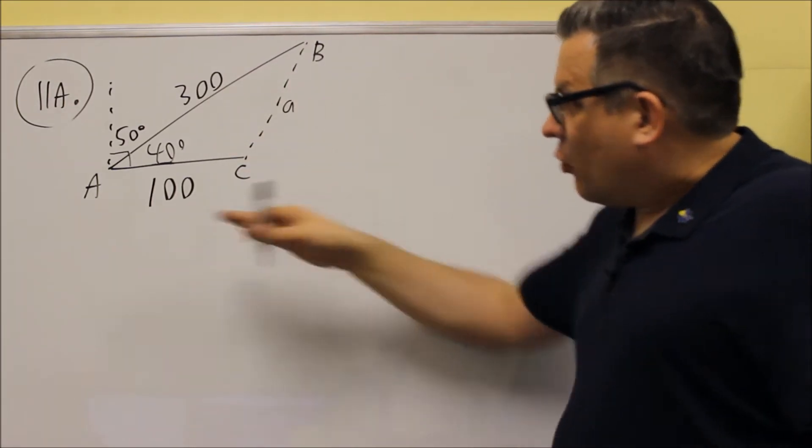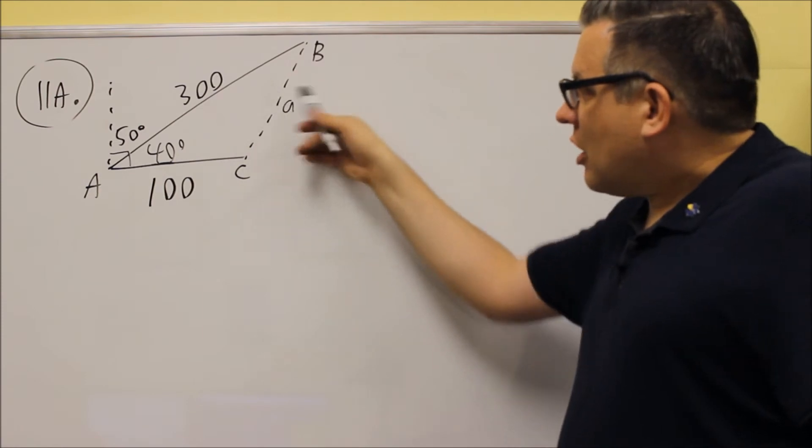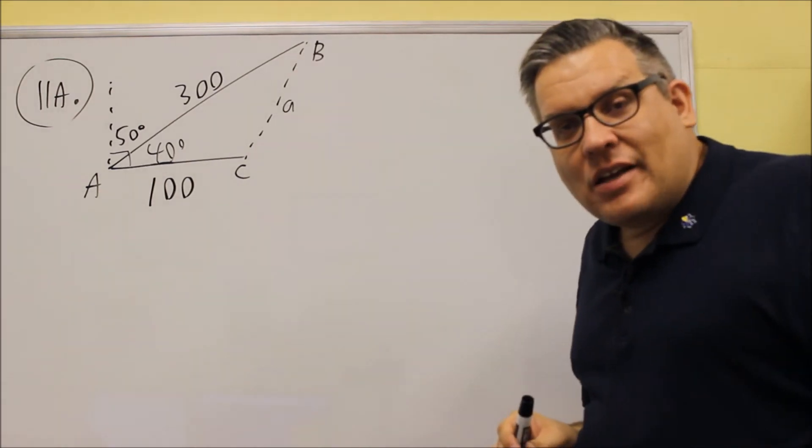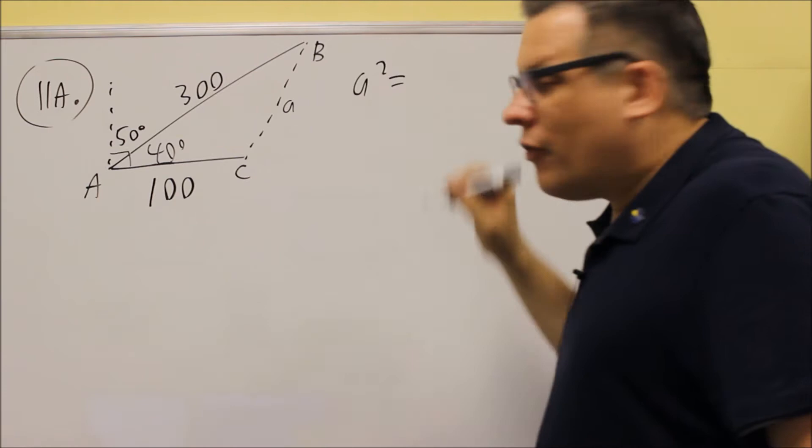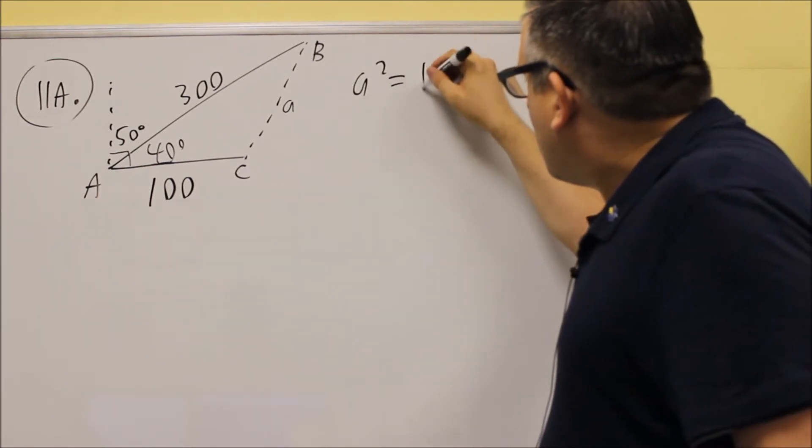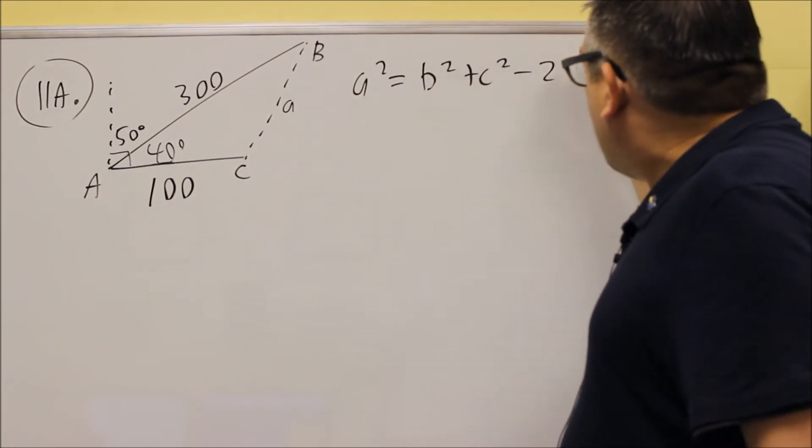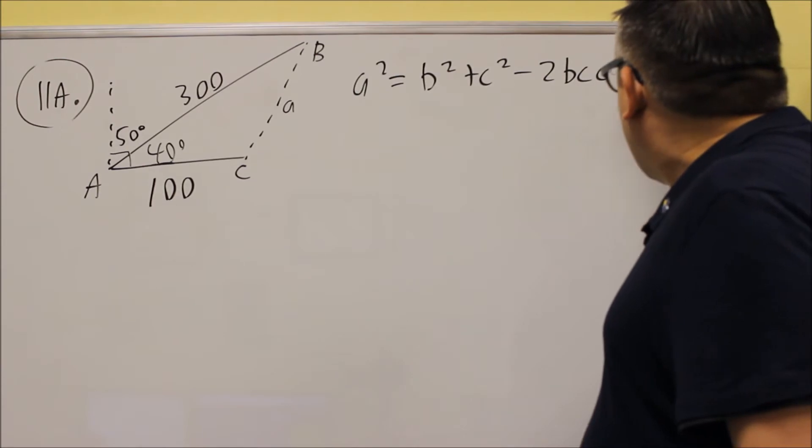In this case, the way it's all labeled, we want to solve for lowercase a, which means that we want to use this version of the law of cosines. A squared equals B squared plus C squared minus 2BC cosine A.